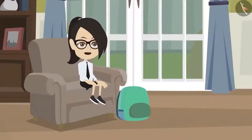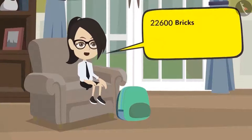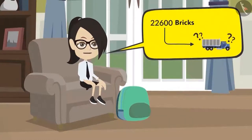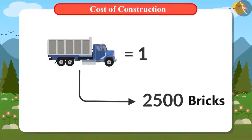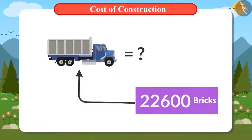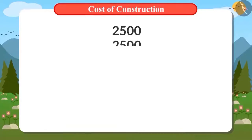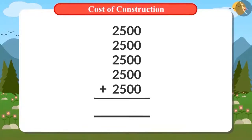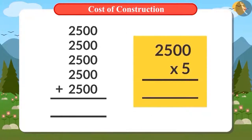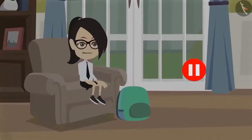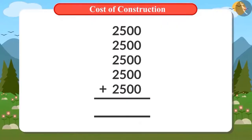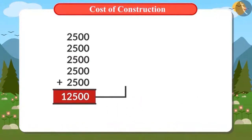Now we have to find out how much it will cost to bring these bricks home. But first, I have to find out how many trucks of bricks will make 22,600 bricks. 2,500 bricks come in one truck. Adding 2,500 five times — we can also multiply 2,500 by 5. You too can find the answer by pausing this video. The answer is 12,500, which is smaller than 22,600.